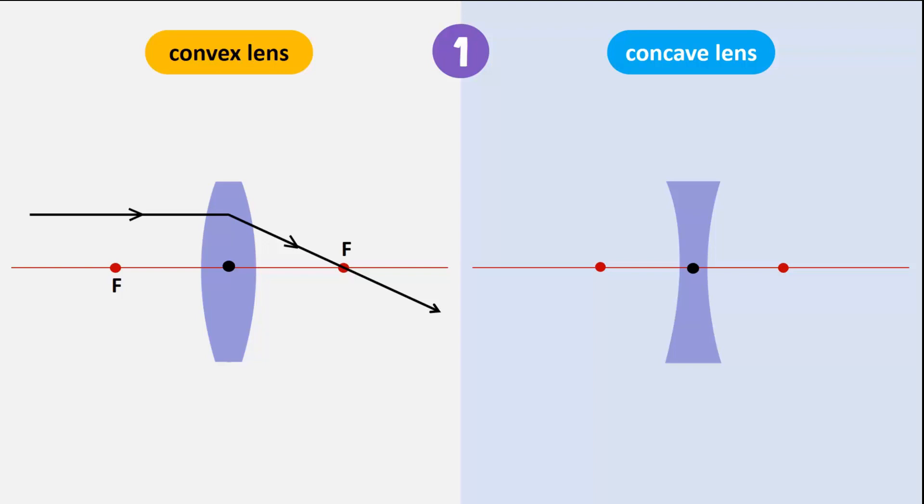However, when the same ray passes through the concave lens, it diverges, and its refraction can be traced back to the focal point.